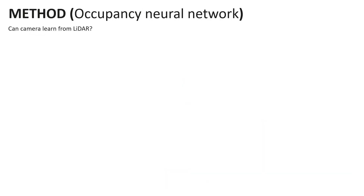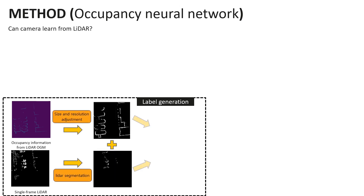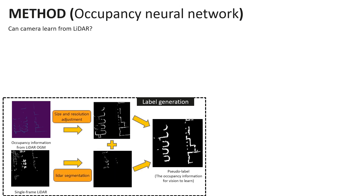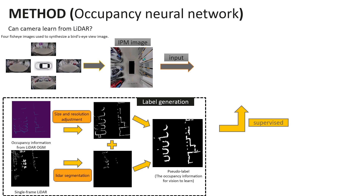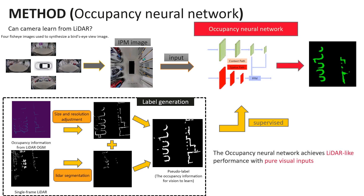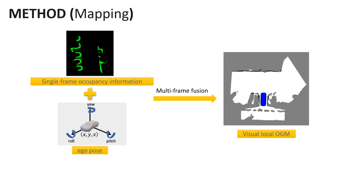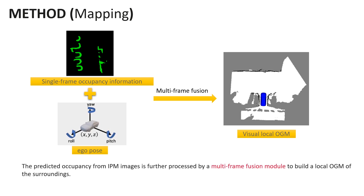We use occupancy information from LiDAR OGM to generate pseudo-labels, and we obtain the visual occupancy information after the IPM images are supervised by the network. The occupancy neural network achieves LiDAR-like performance with pure visual inputs. The predicted single-frame visual occupancy information from IPM images is further processed by a multi-frame fusion module to build a local OGM of the surroundings.